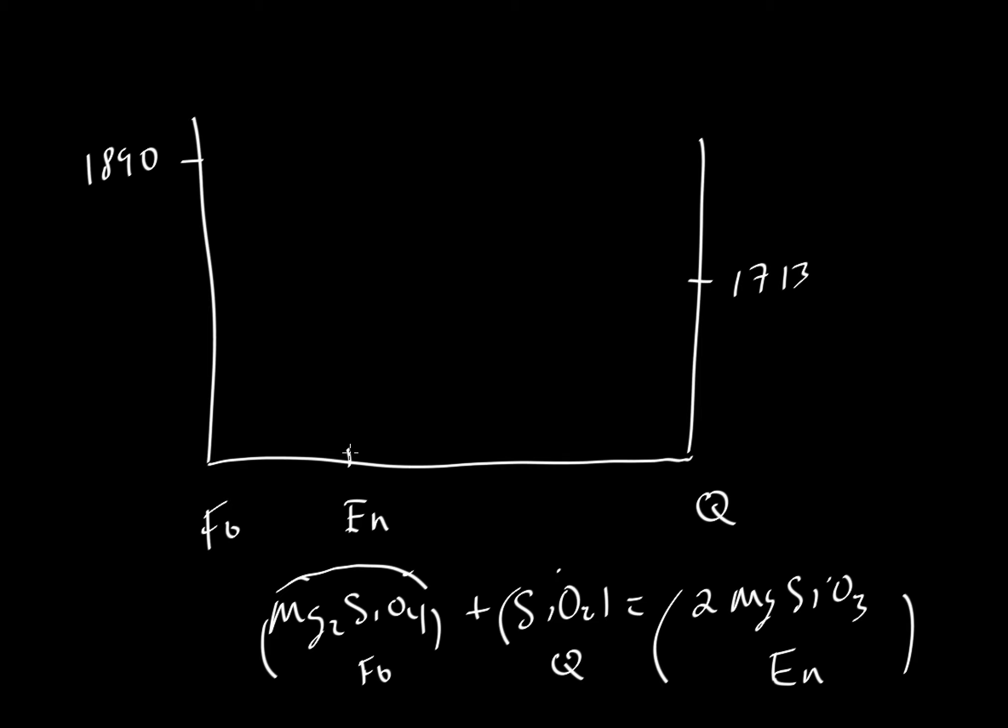So what happens when we heat up enstatite? Well, something really interesting happens. And it happens at a temperature of 1557 degrees centigrade. All these temperatures are in degrees centigrade, by the way. So what happened with enstatite? I would imagine it must have shocked the early experimenters is that if we melt enstatite, you'd think you'd get a liquid that's made of the same composition, and we can just continue working our way upwards. Well, that's not what happens.